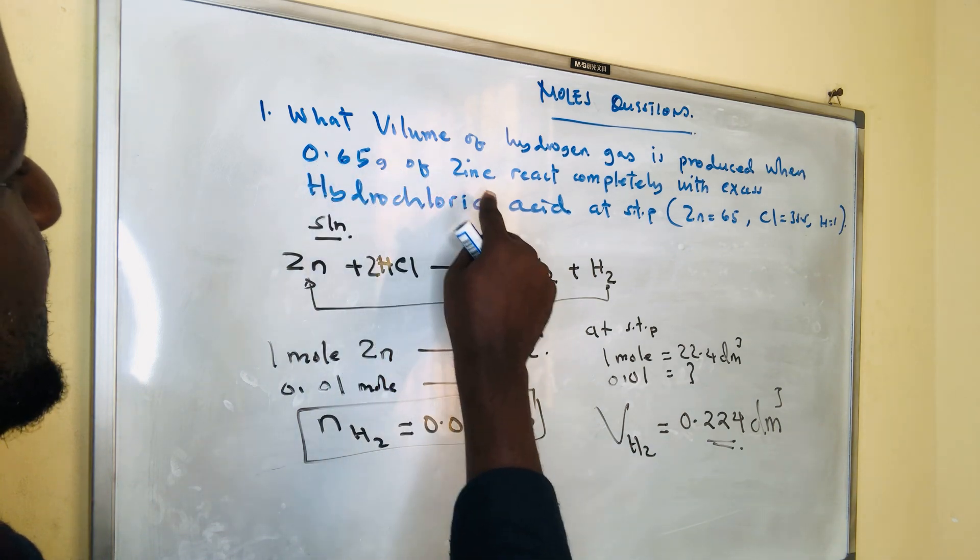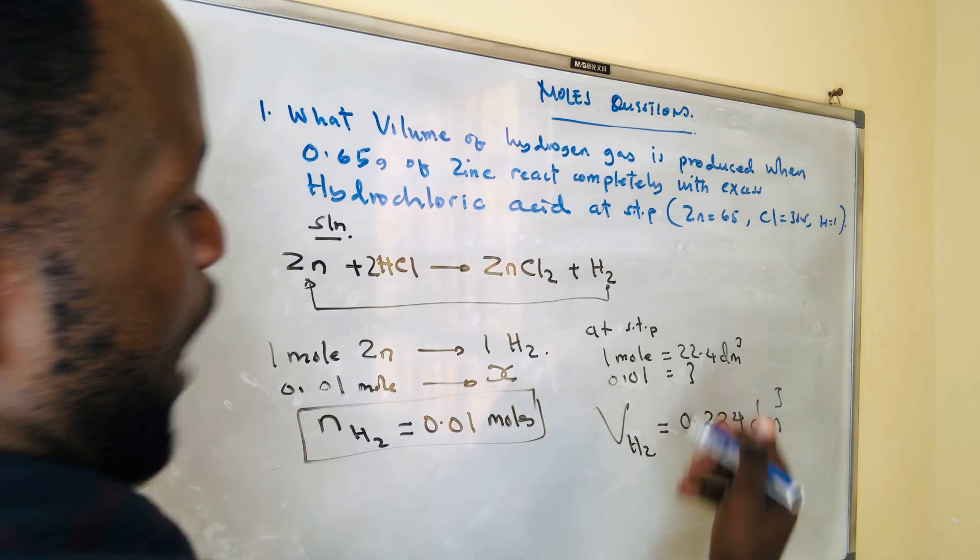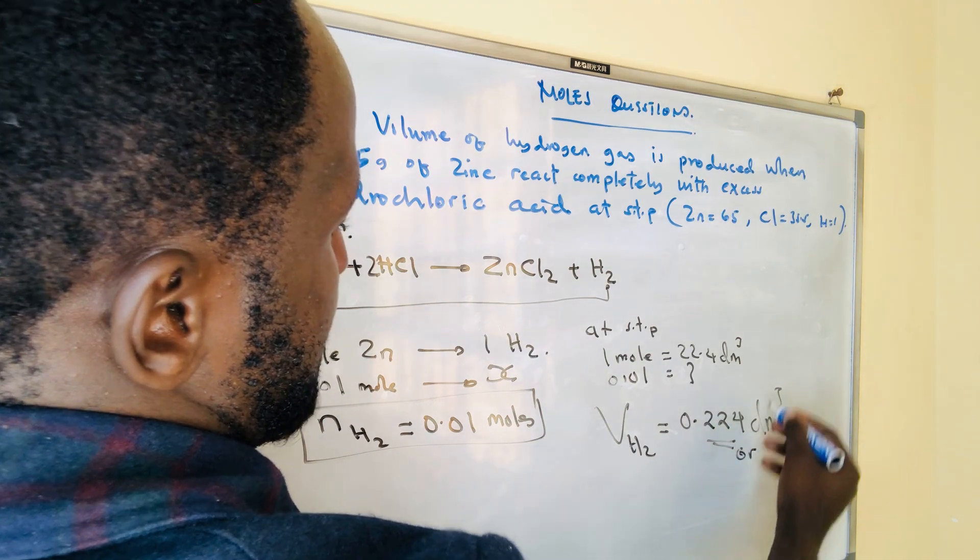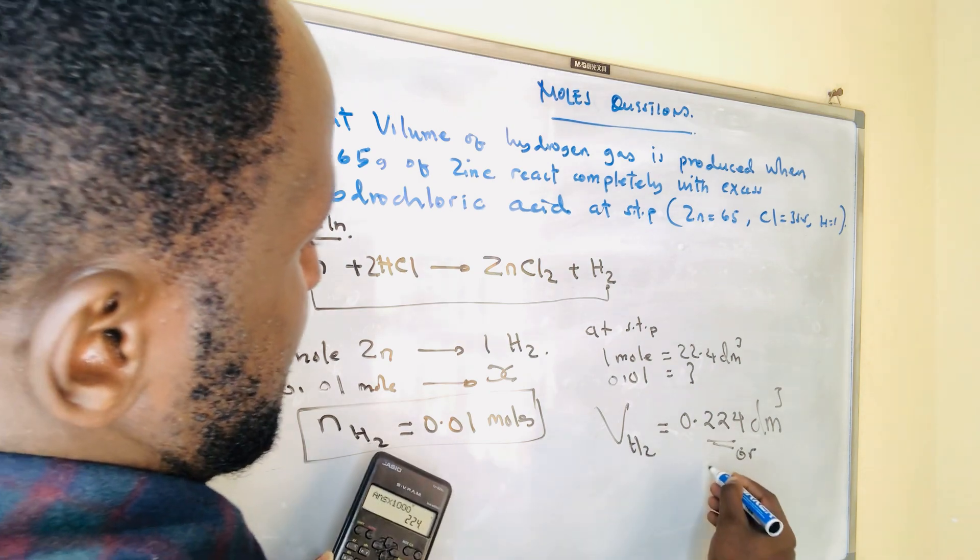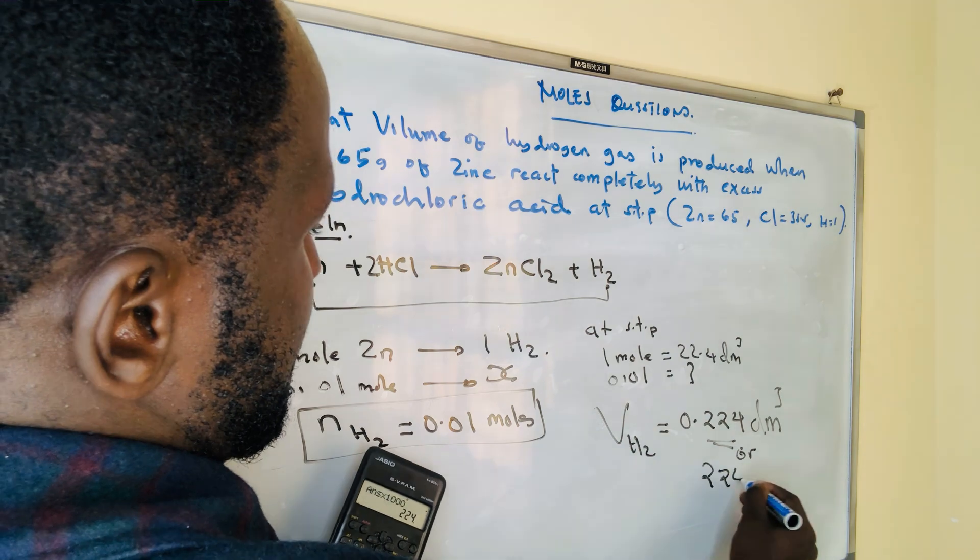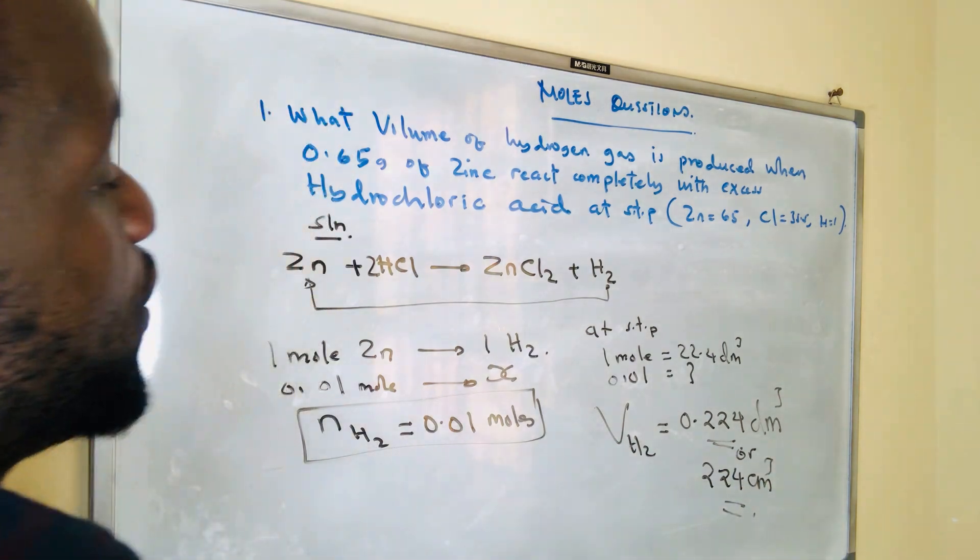If you take 0.65 grams of zinc and treat it with hydrochloric acid, or if the answer is required in cm³, you multiply by 1000 and get 224 cm³.